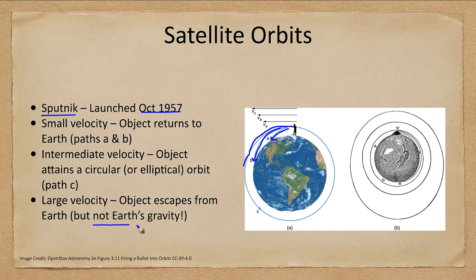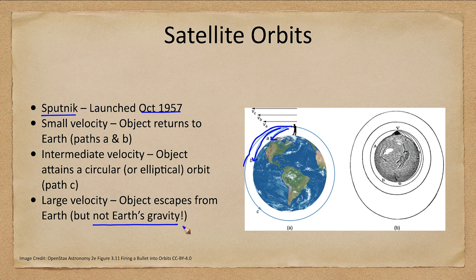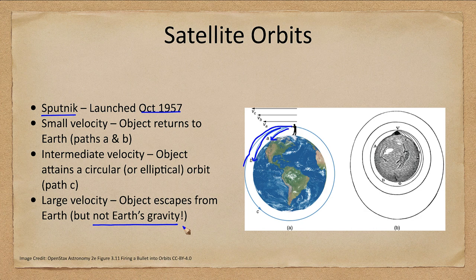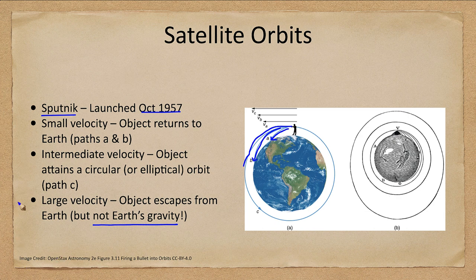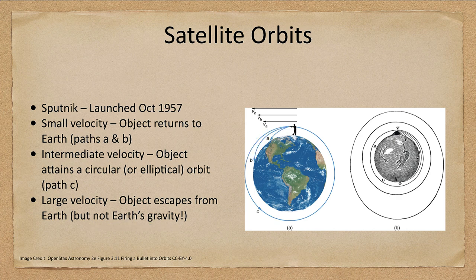But note that it does not escape from Earth's gravity. Gravity never ends. It goes on forever. So no matter how far away something is from Earth, you can calculate how much force of gravity is pulling on it. It could certainly be negligible enough that it's never going to pull the object back. But there is always a force of gravity between any two objects with mass.